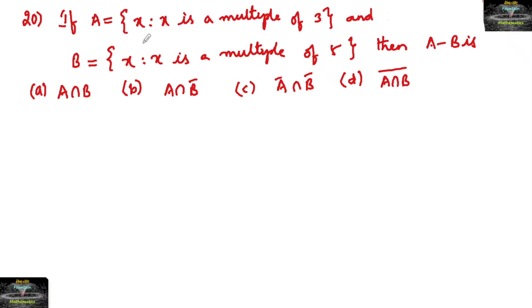If A is equal to x such that x is a multiple of 3, and B is equal to x such that x is a multiple of 5. So A is nothing but multiples of 3. We can take A in roster form.